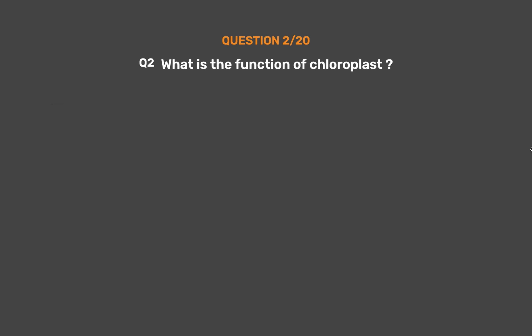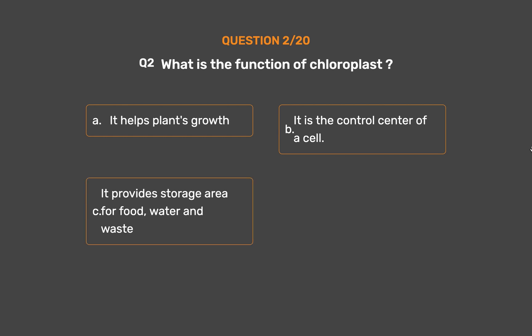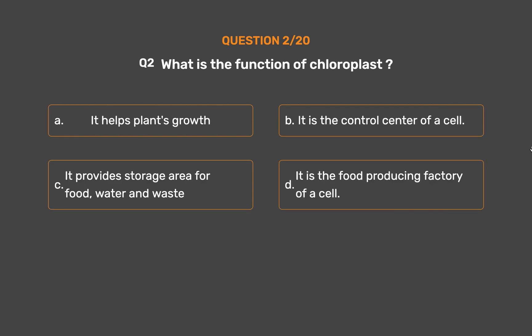Question number 2. What is the function of chloroplast? Option A: It helps plants grow. Option B: It is the control center of a cell. Option C: It provides storage area for food, water and waste. Option D: It is the food producing factory of a cell.